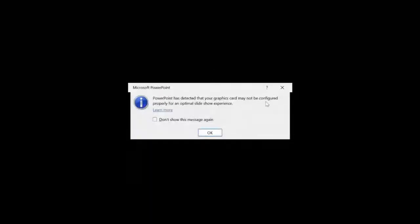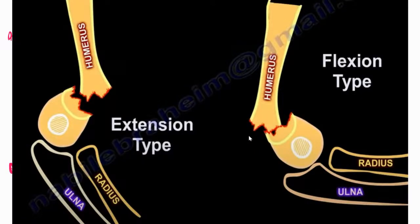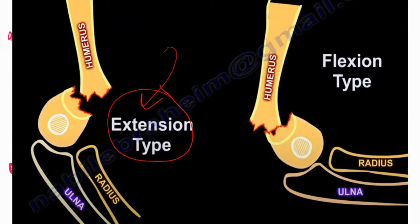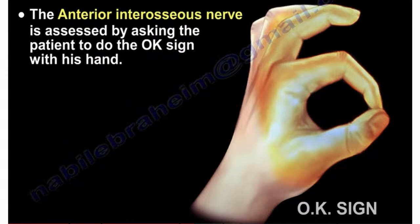Happy New Year. Tonight we'll be talking about common nerve conditions of the upper extremity. Supracondylar fractures of the humerus in children get involved with nerve injuries. The most common type is the extension type, and that extension type will affect the anterior interosseous nerve — it's really the median nerve, a high median nerve, but it presents as an anterior interosseous nerve. The flexion type is rare and will affect the ulnar nerve.